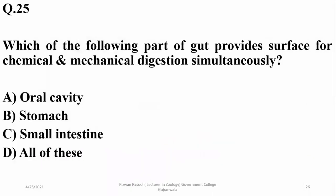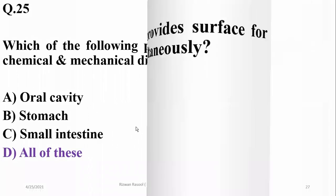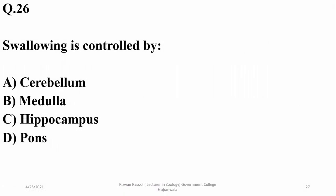Which of the following parts provides a surface for both chemical and mechanical digestion simultaneously? It is the oral cavity, stomach, and small intestine — chemical as well as mechanical digestion occurs at all three sites: oral cavity (amylase and teeth), stomach (churning and pepsin), and small intestine (emulsification and enzymatic digestion). So the answer is delta.